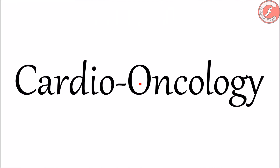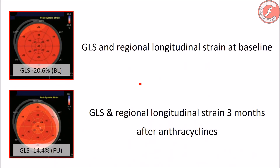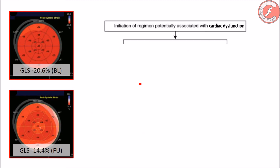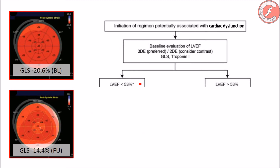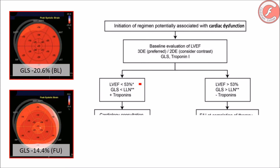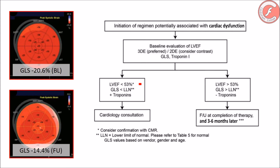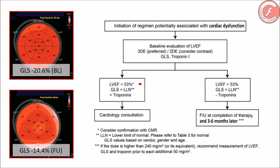Cardio-oncology. Nowadays, therapeutic decisions in oncologic patients treated with chemotherapy are based according to the changes that the ejection fraction suffers throughout the therapeutic cycle. However, the global longitudinal strain is capable of detecting systolic dysfunction early, not only in patients treated with chemotherapy, but also in patients treated with radiotherapy.